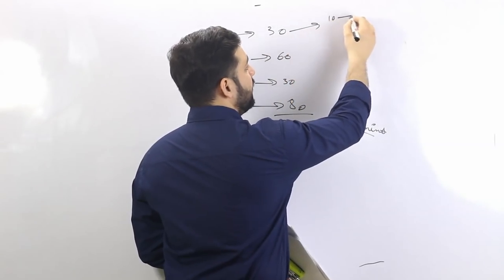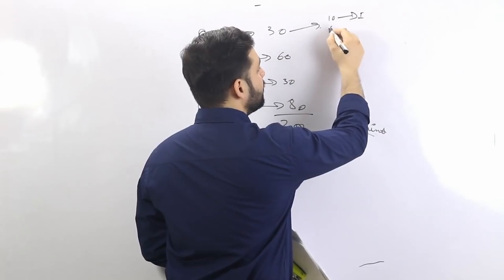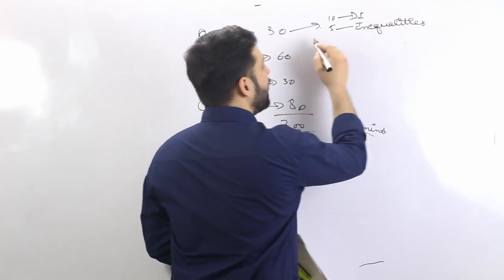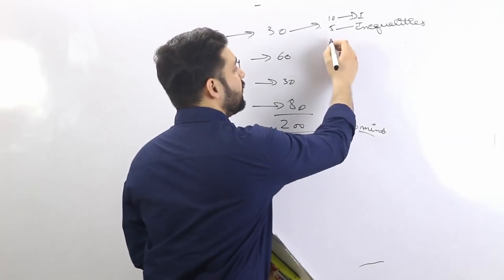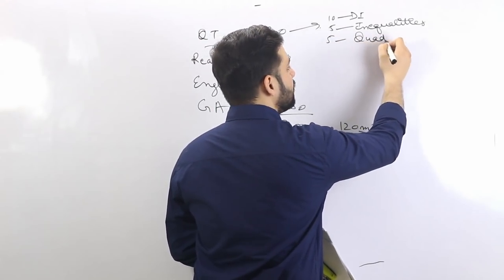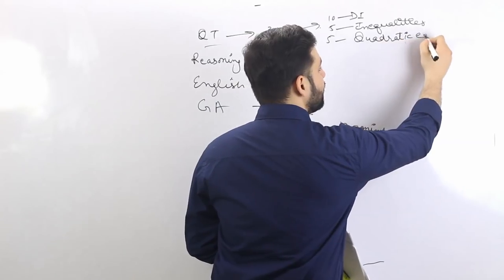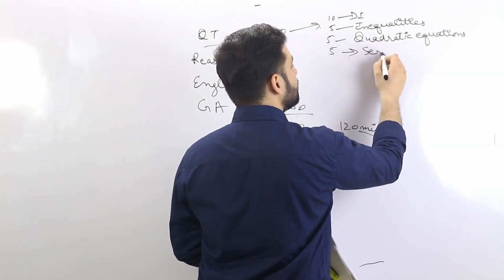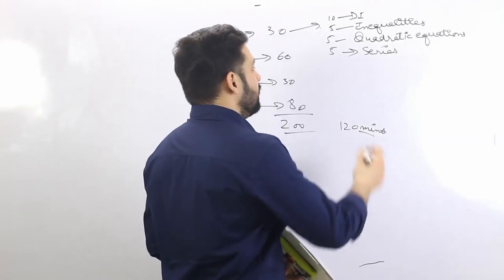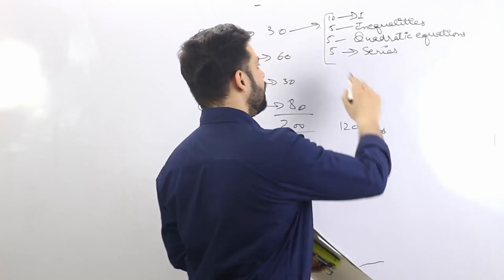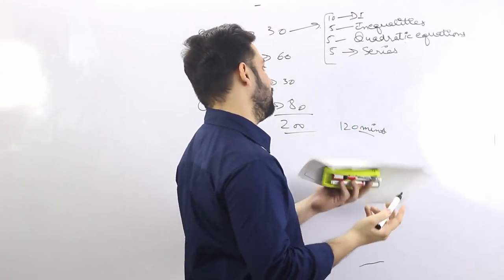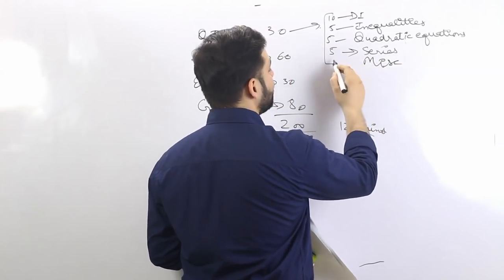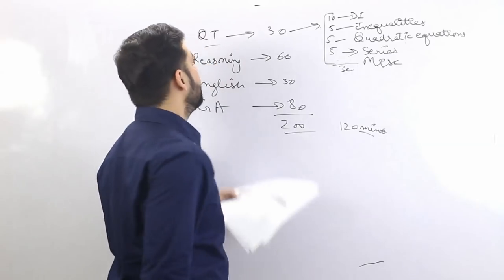Out of 30, 10 were DI, then inequalities — five marks — then quadratic equations, series, and related questions. This is not a fixed pattern. Maybe next year you won't find quadratic equations or inequalities — that can happen. Then there is time and work, time and distance, mixtures, allegations — these kinds of questions are there. The total is 30 marks, that's the quantitative aptitude syllabus.